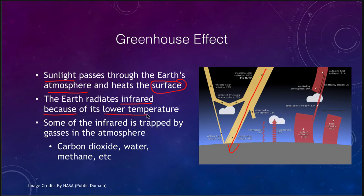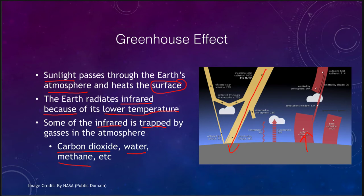The earth has a lower temperature than the sun — the sun being nearly 6,000 degrees and the earth being just a couple hundred degrees in terms of Kelvins — so it is radiating off in the infrared. Some of that material heads off into space, and that infrared radiation can be trapped by gases in the atmosphere. Carbon dioxide, water, and methane are three very good examples of things that can absorb that infrared radiation and keep it from escaping.